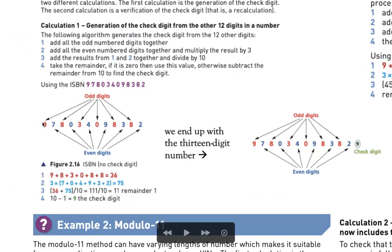We look at the odd positions versus the even positions of this number. The odd positions are 1, 3, 5, 7, 9, and 11; the even positions are 2, 4, 6, 8, 10, and 12. We separate the numbers in the odd positions — 9, 8, 3, 0, 8, and 8 — and simply add them together to get 36. Then we take the numbers in the even positions — 7, 0, 4, 9, 3, and 2 — add them together, and multiply by 3.